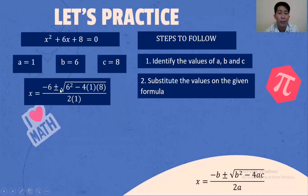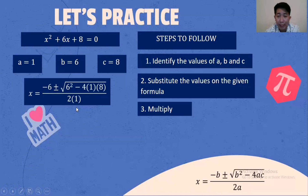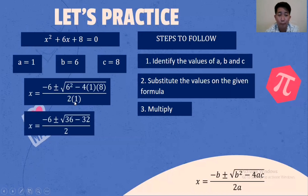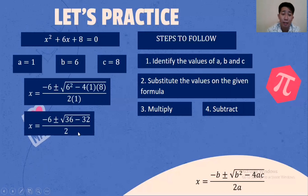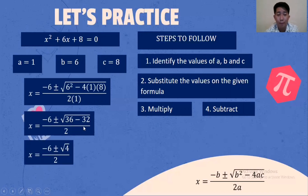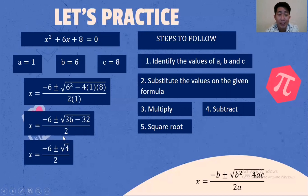Negative 6 plus or minus the square root of 6 squared minus 4 times 1 times 8, over 2 times 1. Multiply: 6 times 6 is 36. Negative 4 times 1 times 8 is negative 32. 2 times 1 is 2. Then subtract: 36 minus 32 is 4. Square root of 4 is 2.